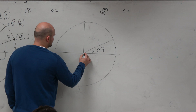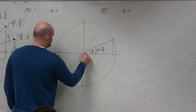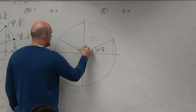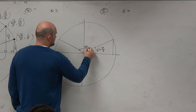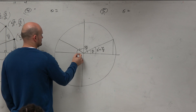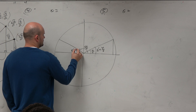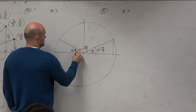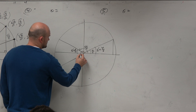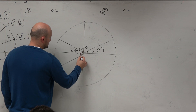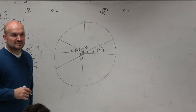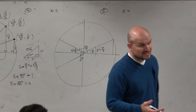What about this angle — 5 pi over 6? What is the reference angle over there? And what about 7 pi over 6? Anybody know what that reference angle is? Pi over 6. Pi over 6 again — that's the difference.